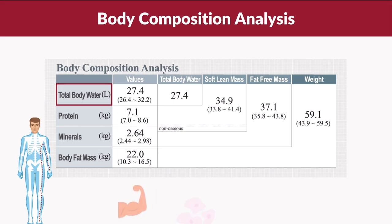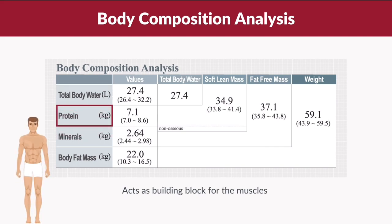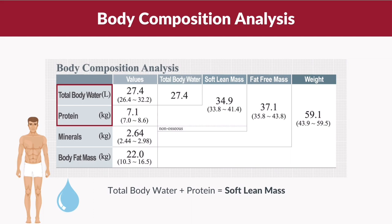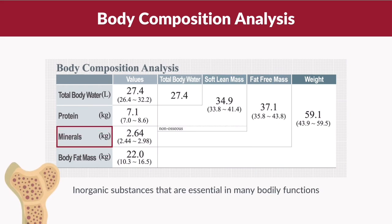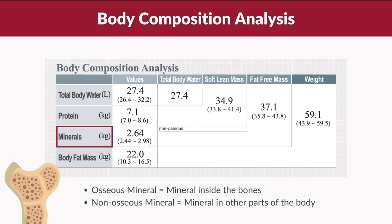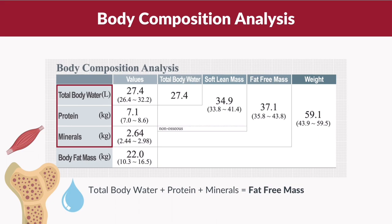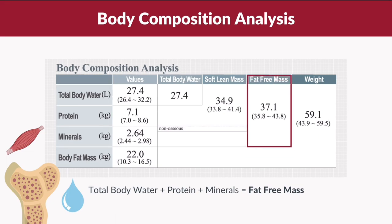Water can be found in our muscles, cells, blood, and other bodily fluids. Protein is the crucial element in the human body and it acts as the building block for the muscles. By totaling up the total body water and protein, we will get the value for soft lean mass. Minerals are inorganic substances that are essential in many bodily functions. Minerals found inside the bones are osseous minerals, and minerals found in all other parts of the body are non-osseous minerals. Adding up the minerals, total body water, and protein will give you the value for fat-free mass.